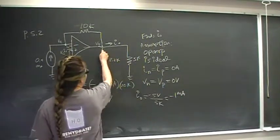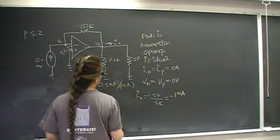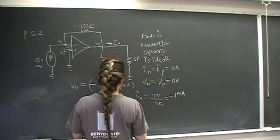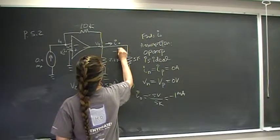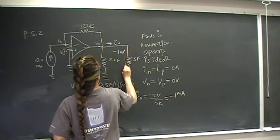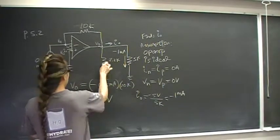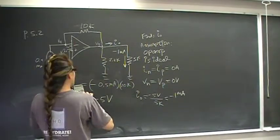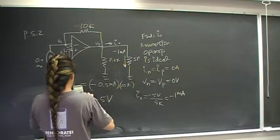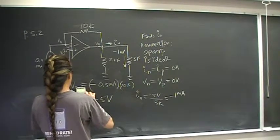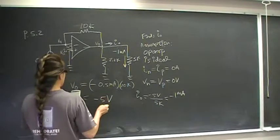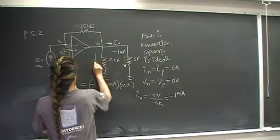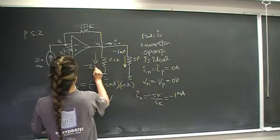So, and then here, just for fun, the current through there, we have negative 5, so we have negative 1 there. And just for fun, we have negative 5 divided by 2.2, so that's going to give us, through here, negative 2.27.